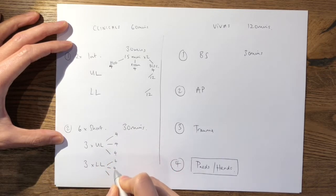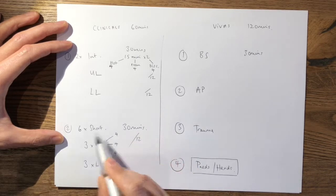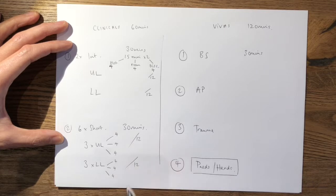So again, you'll have 12 scoring opportunities in all of your upper limb shorts and 12 scoring opportunities in all of your lower limb shorts.